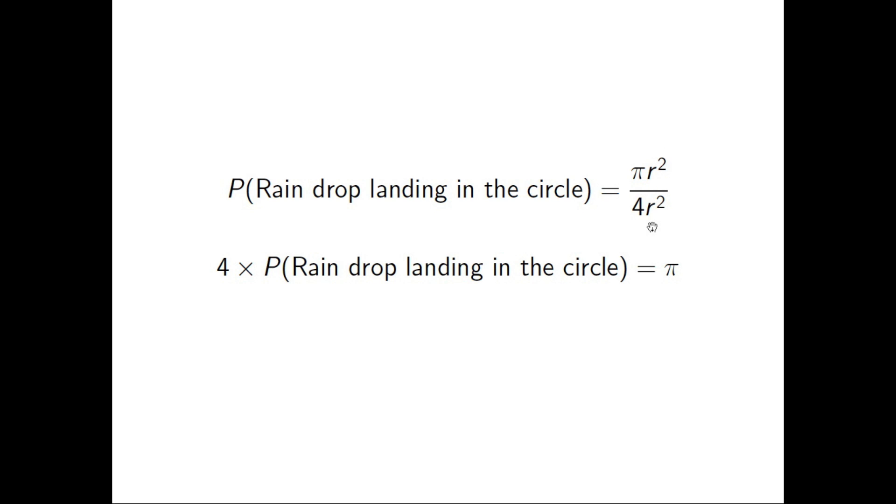And we can just cancel out the r squareds, and we can get that 4 times the probability of a raindrop landing in the circle is equal to pi.